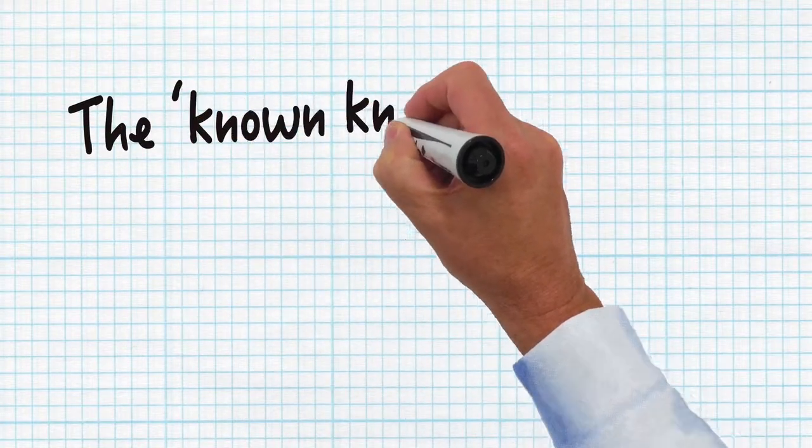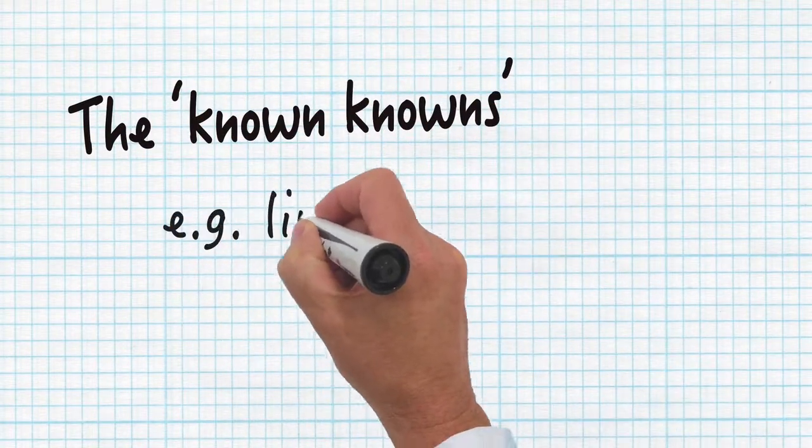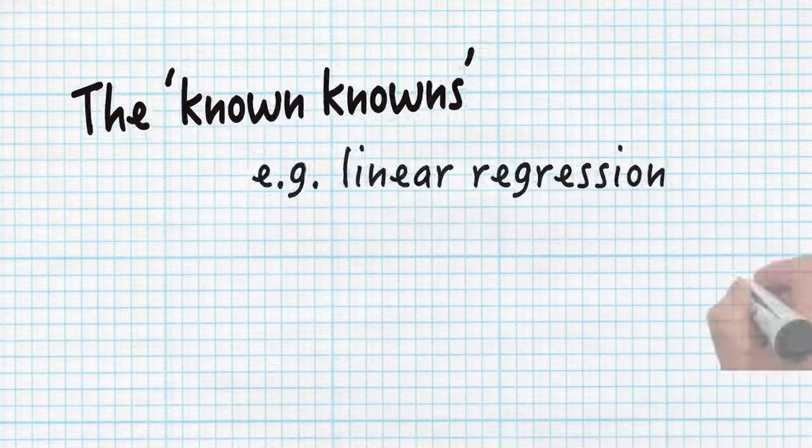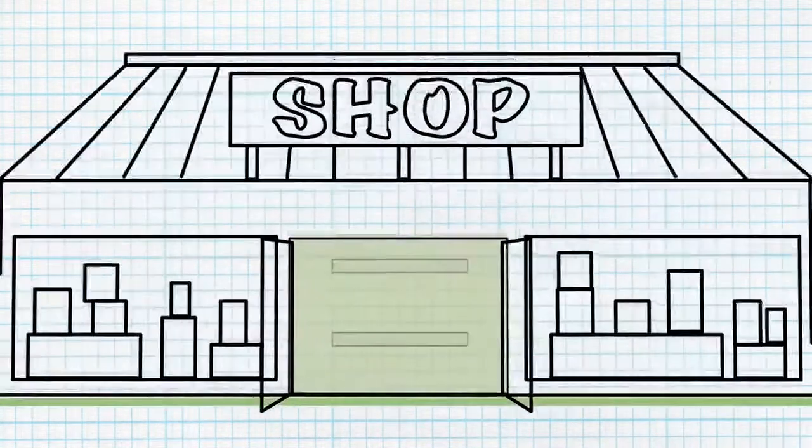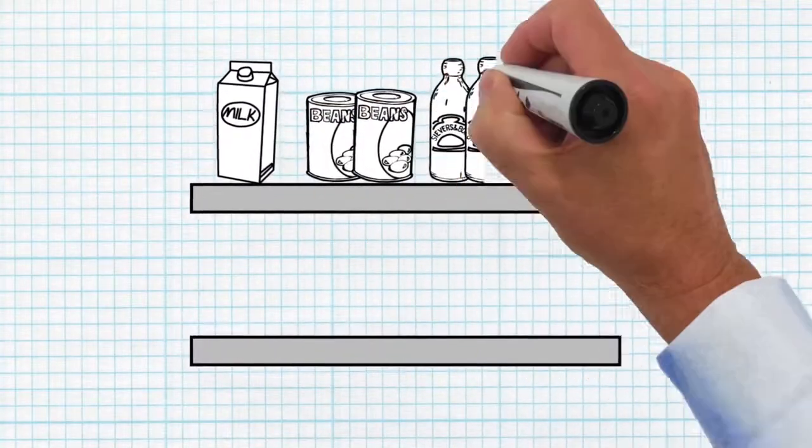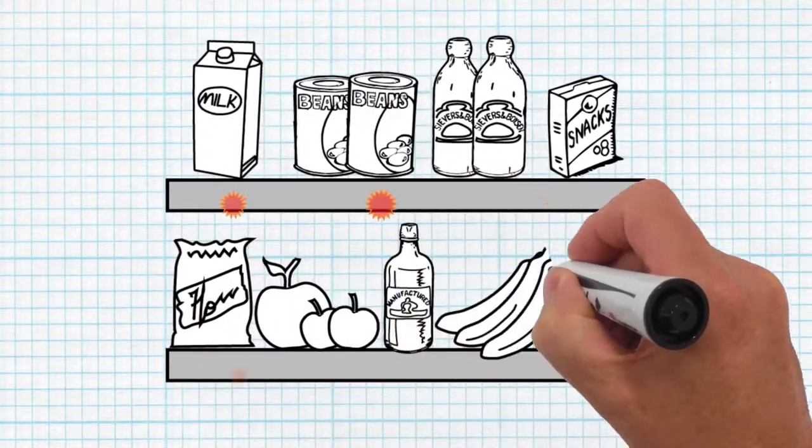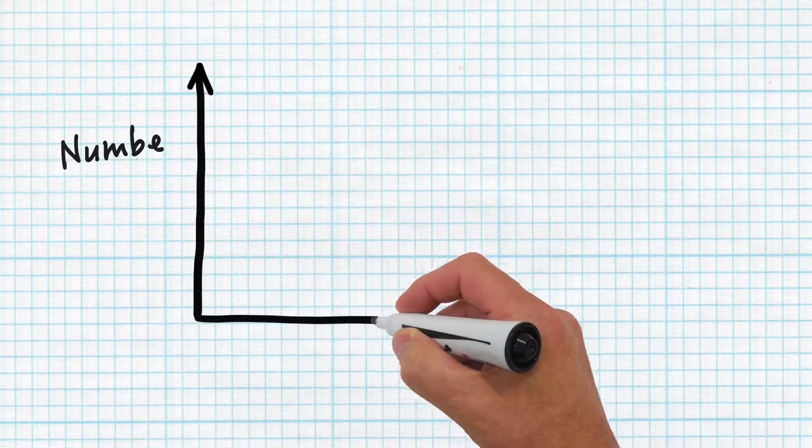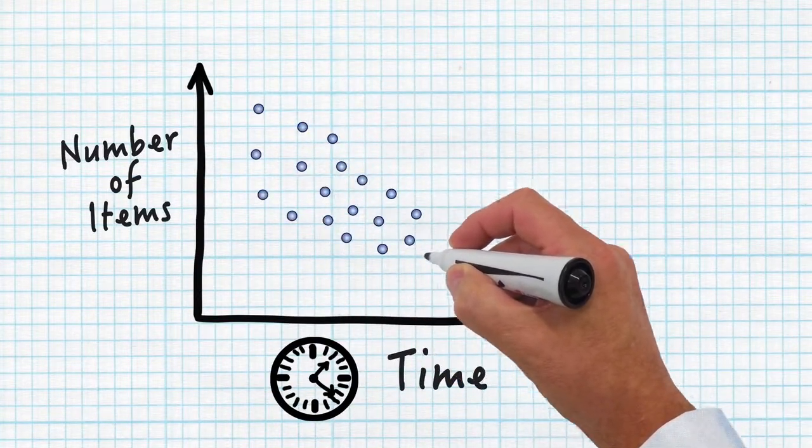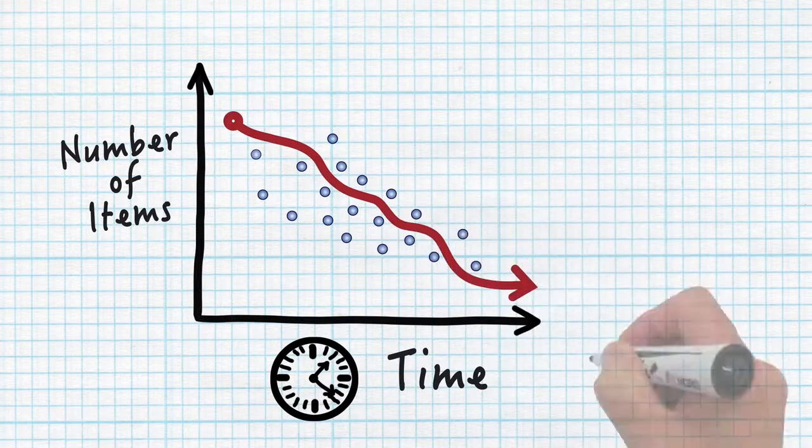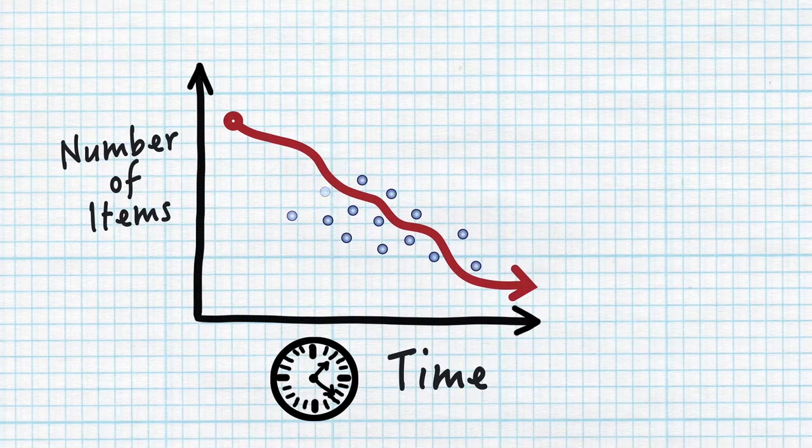An example of the first class of algorithms, the known knowns, is simple linear regression. For example, assume we instrumented a shop in the high street with sensors which are able to measure the amount of goods on the shelves. If we now plotted that amount against time, linear regression would allow us to establish the best fit for how quickly the shelves are being emptied.